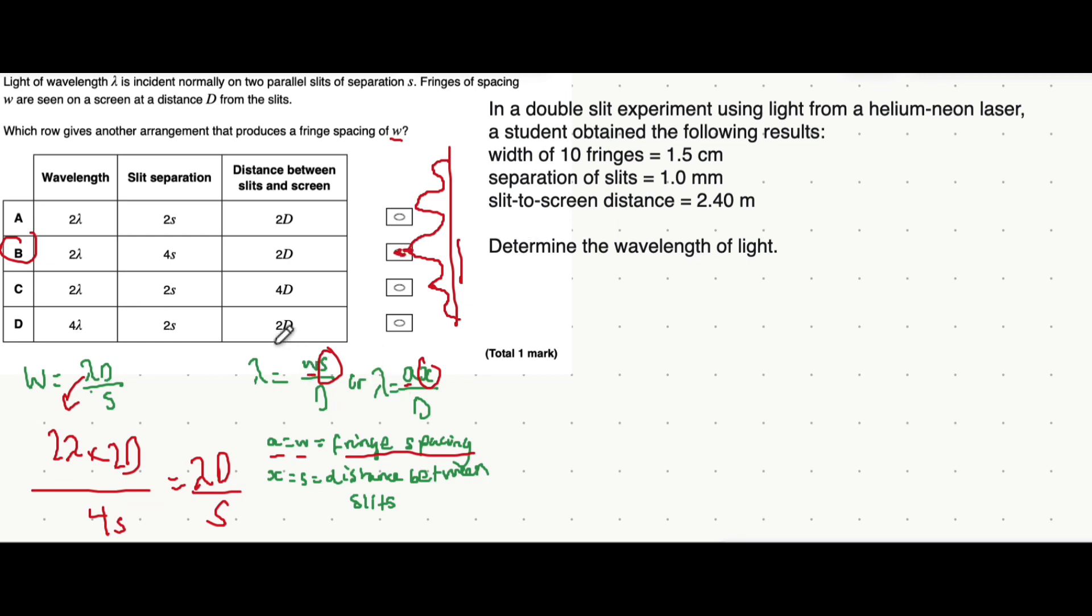Let's now look at using this equation in a calculation. It asks for the wavelength of light. Let's break it down. We first need W, the distance between two bright fringes. We're told the distance between 10 fringes is 1.5 cm, so the distance between two is 1.5 divided by 10.